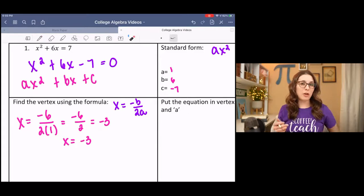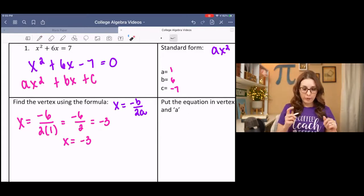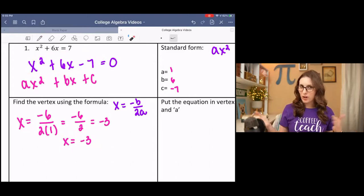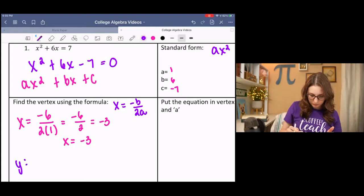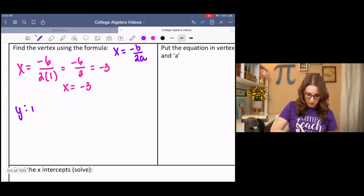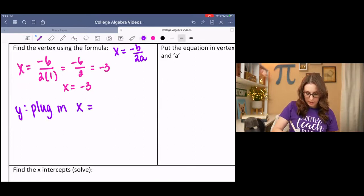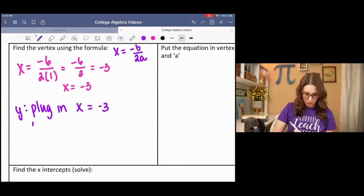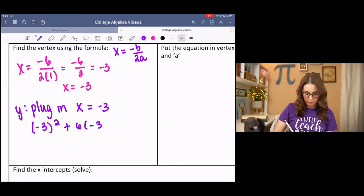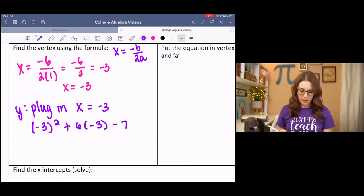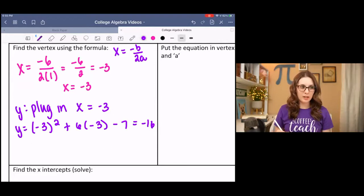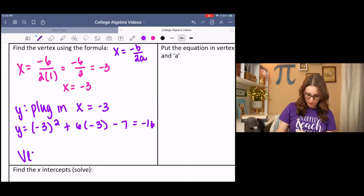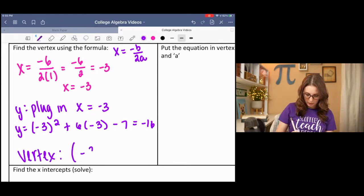Now, we have an x coordinate of the vertex, but a vertex is a point. So we need the y coordinate. If we have the x coordinate and the function, what do you think we're going to do with that x coordinate? Plug it in. So next step, we find y by plugging in negative 3 for x, which means we have negative 3 squared plus 6 times negative 3 minus 7. And we get 9 minus 18 minus 7 is negative 16. So we have our x coordinate and our y coordinate, which makes the vertex negative 3, negative 16.